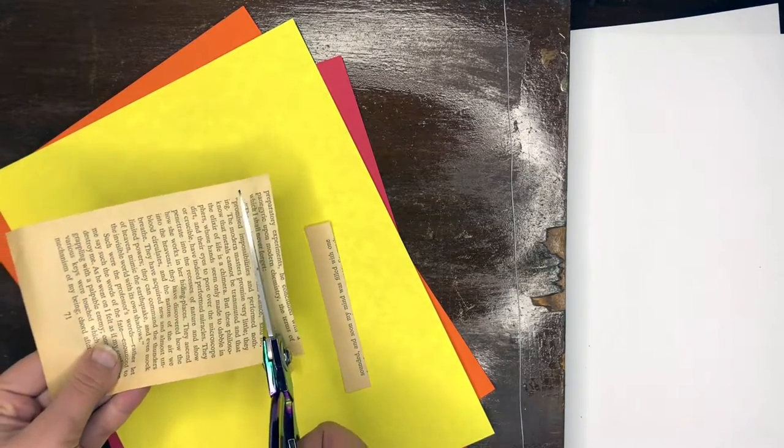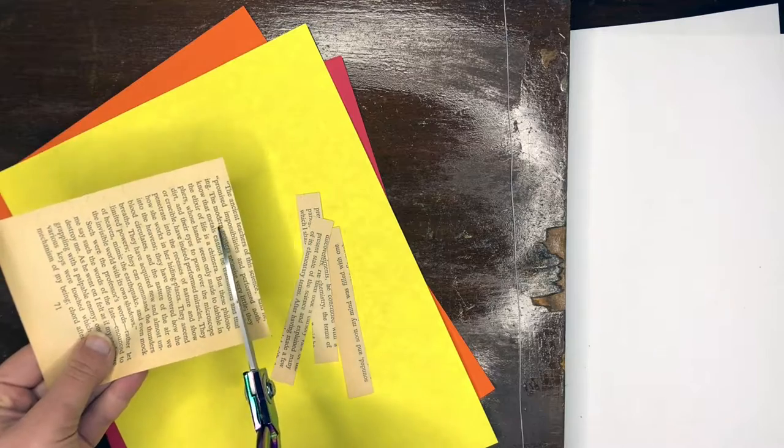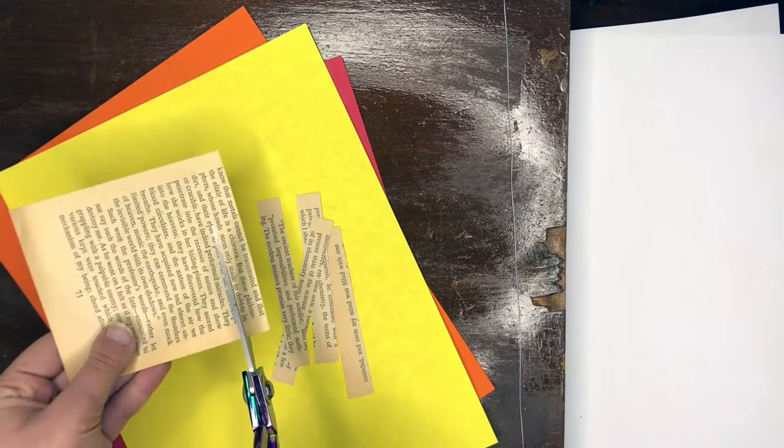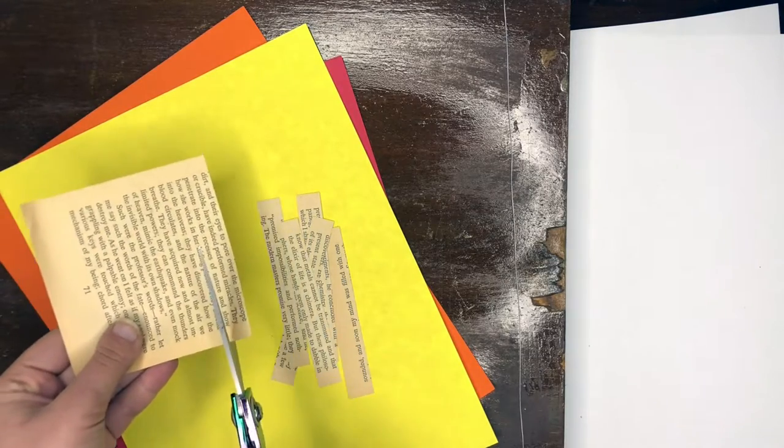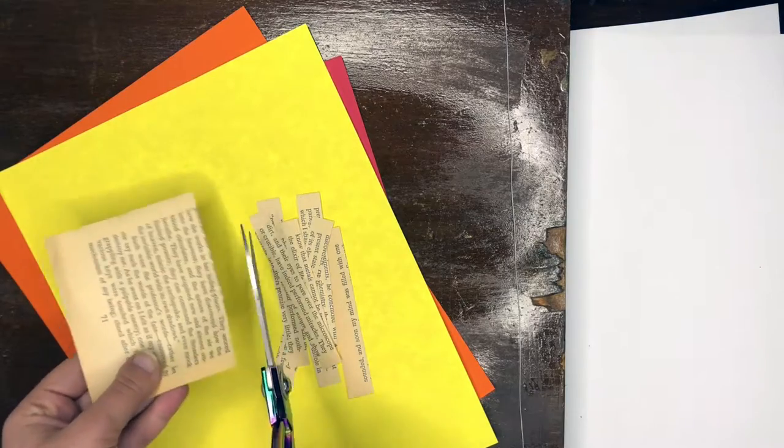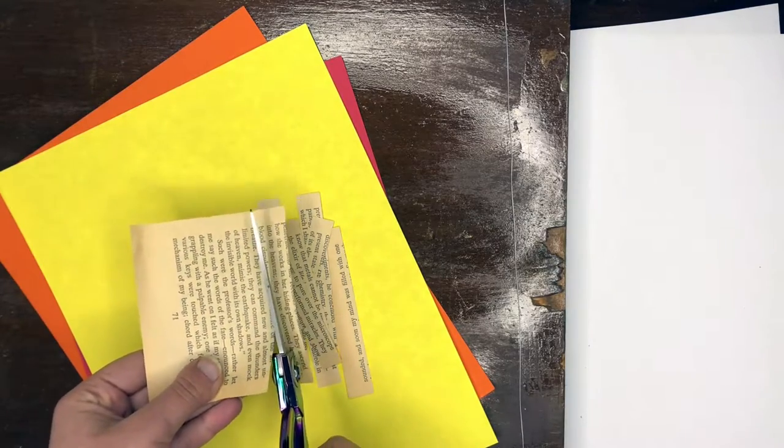But how do we want it on the string? Now you could actually sew the paper together with the string or we can use some clear tape or the tape can be part of the art.